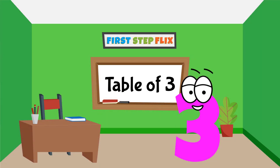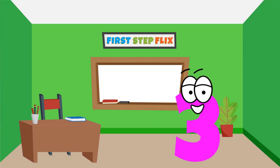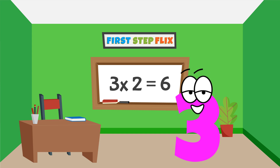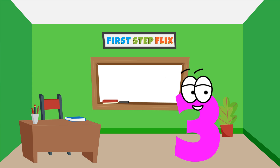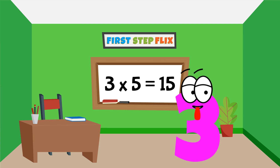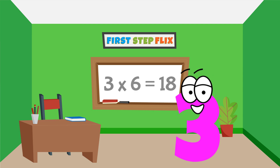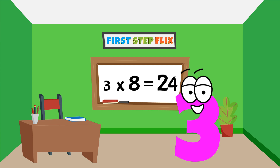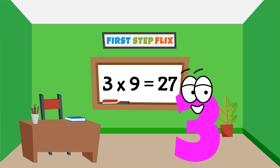Three ones are three, three twos are six, three threes are nine, three fours are twelve, three fives are fifteen, three sixes are eighteen, three sevens are twenty-one, three eights are twenty-four, three nines are twenty-seven.